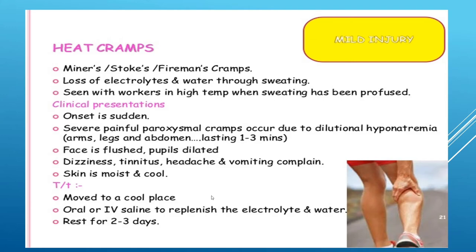Heat cramps present as sudden onset, severe, painful, progressive cramps due to dilutional hyponatremia in the muscles of the arms, legs, and abdomen, lasting one to three minutes. The face is flushed, pupils are dilated, and there is dizziness, tinnitus, headache, and vomiting. The skin is moist and cool because of excessive sweating. Treatment: move the person to a cool place, give plenty of oral fluids — preferably ORS — and in severe cases IV saline and electrolytes, with rest for two to three days.